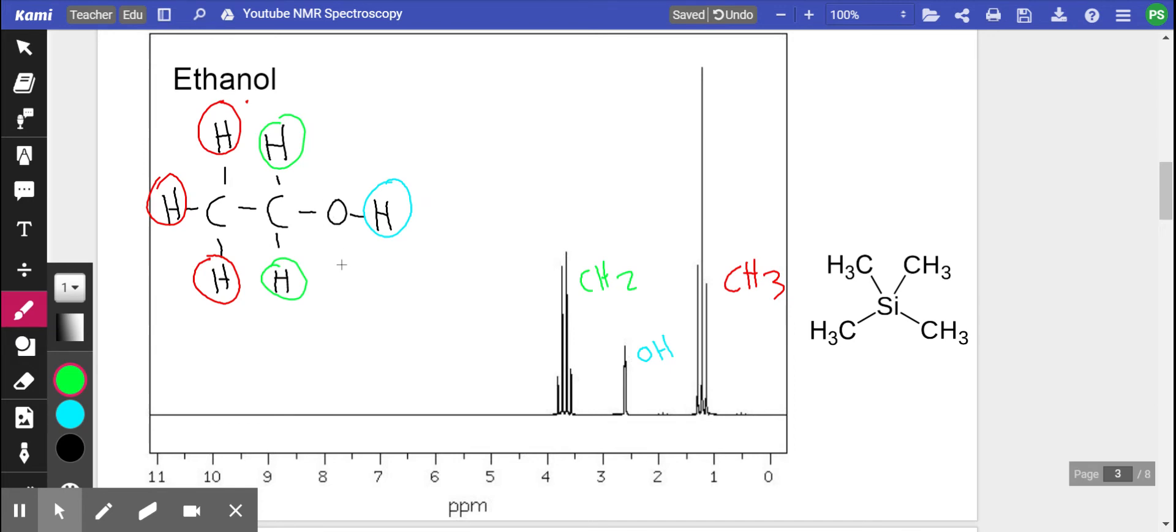Okay, now the interesting thing about NMR spectroscopy is that it gives you how many hydrogens there are per environment, and it does that by doing an integration. You don't have to do it, the machine does it itself. So if you know mathematics, integration is the area under the peak.